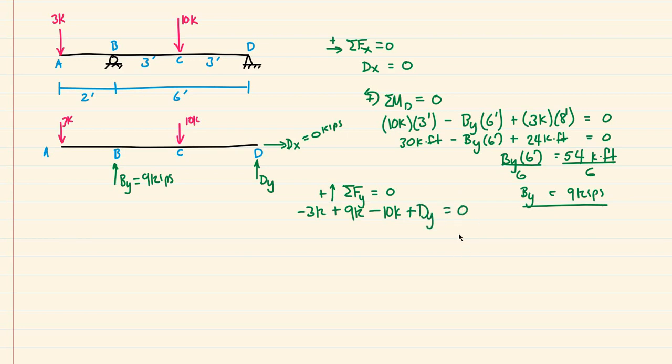Well, negative 3 plus 9 is 6, minus 10 is negative 4 kips, plus D-Y is equal to 0. And if I add 4 kips to both sides, I get D-Y is equal to 4 kips. So there you go, that is our vertical reaction here at point D.